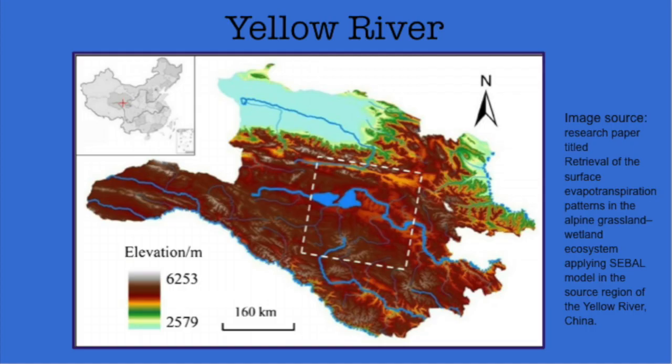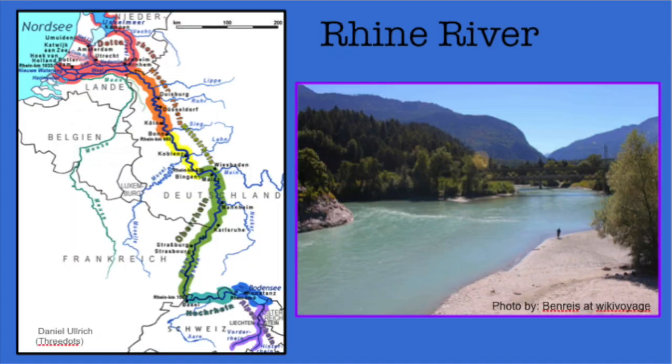The Yellow River in China has headwaters in two mountain lakes. The Rhine River in Europe begins in the Swiss Alps at Lake Toma.